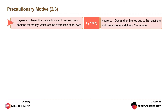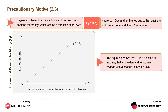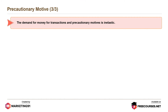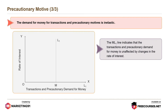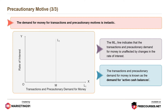Keynes combined the transactions and precautionary demand for money, which can be expressed as L1 is a function of Y, where L1 is demand for money due to transactions and precautionary motives, and Y is income. The equation shows that L1 may change with a change in income level. The demand for money for transactions and precautionary motives is inelastic. The ML1 line indicates that this demand is unaffected by changes in the rate of interest. It is known as the demand for active cash balances.